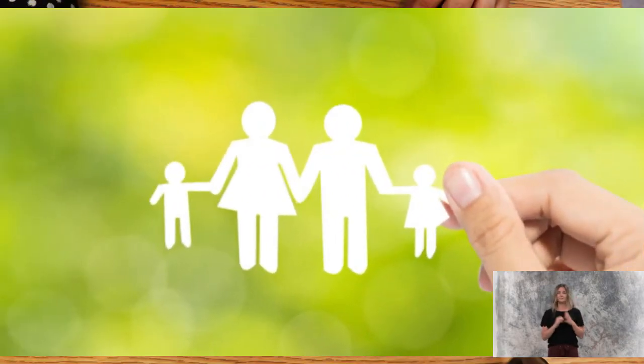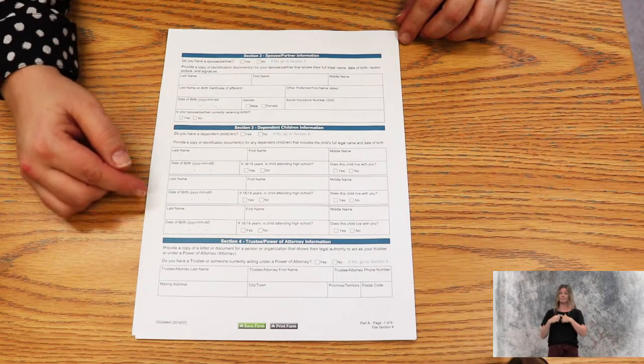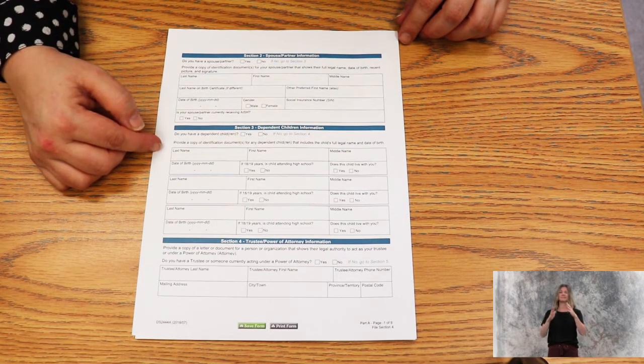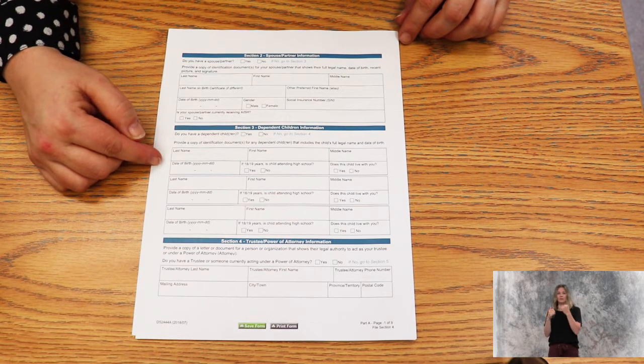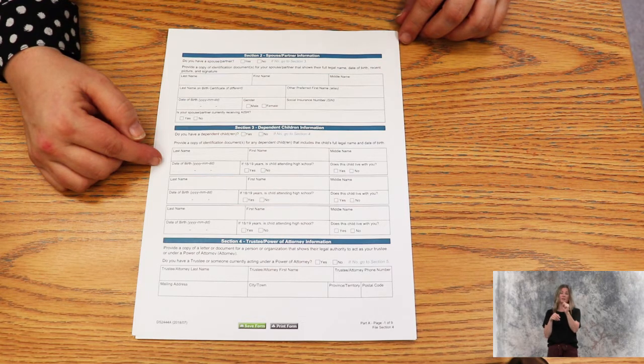Section three has to do with dependent children. If not, you go to section four. If you have dependent children, you need their last name, first name, middle name, date of birth, whether the child is 18 or 19 years old and attending high school, and whether or not the child lives with you.